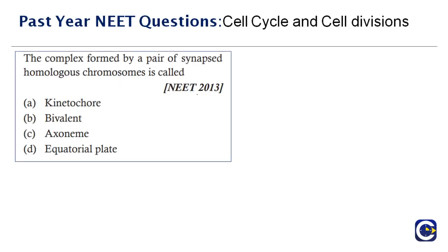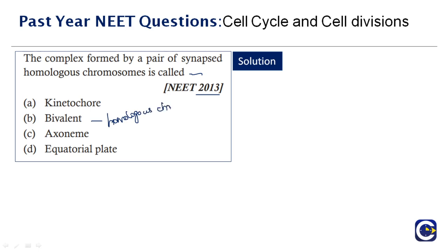The first question was asked in 2013: 'The complex formed by a pair of synapsed homologous chromosomes is called ___.' The correct answer is bivalent. Bivalent is described as homologous chromosomes associated in pairs.